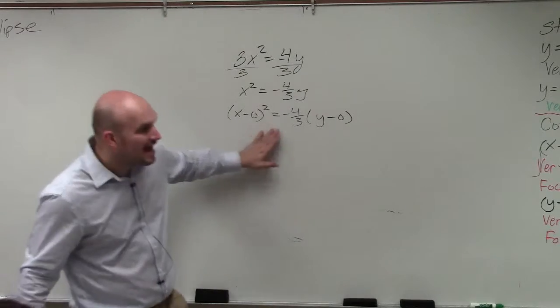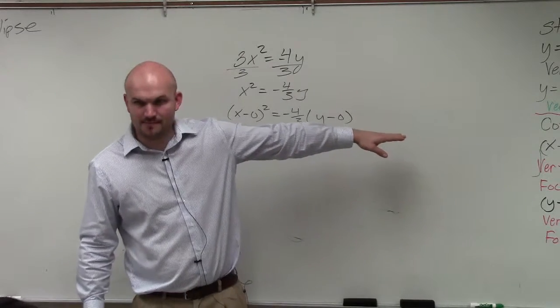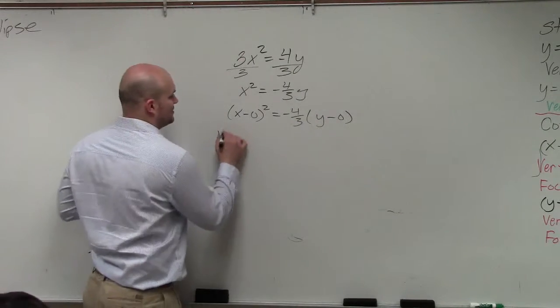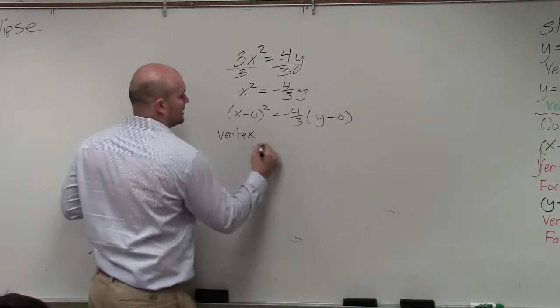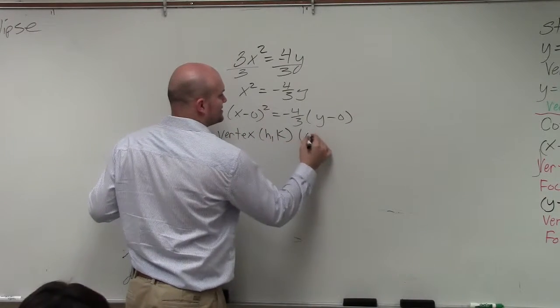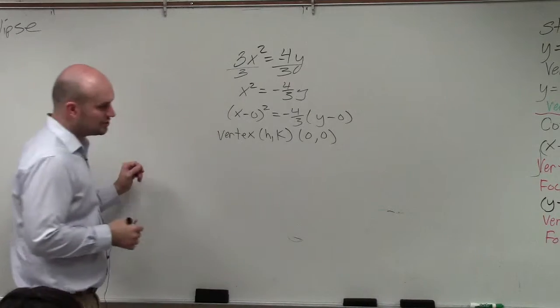You guys see how now it looks more like that formula? So now we can identify the vertex is h comma k, which in this case is 0 comma 0. So it occurs at the origin.